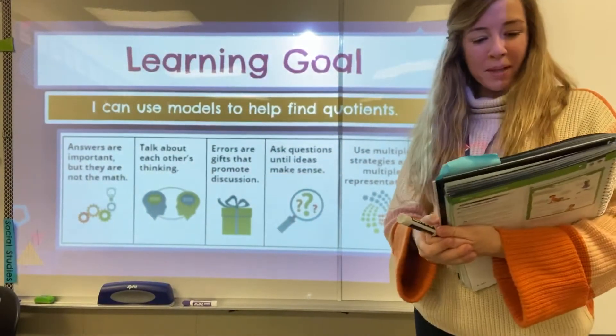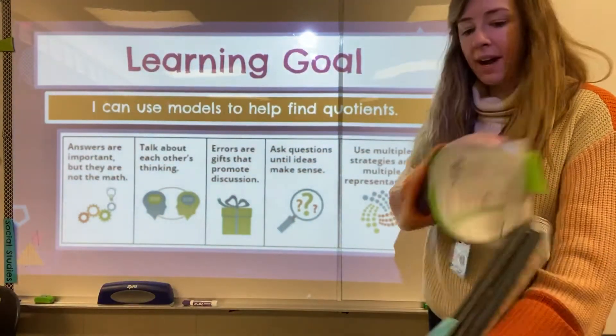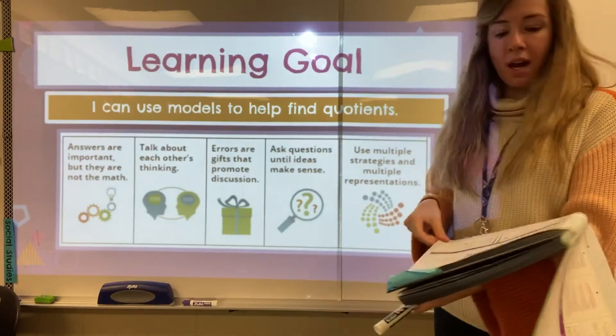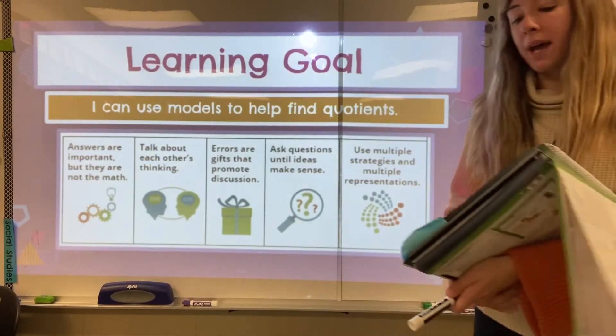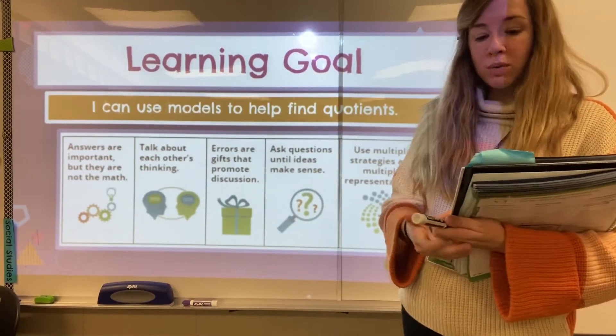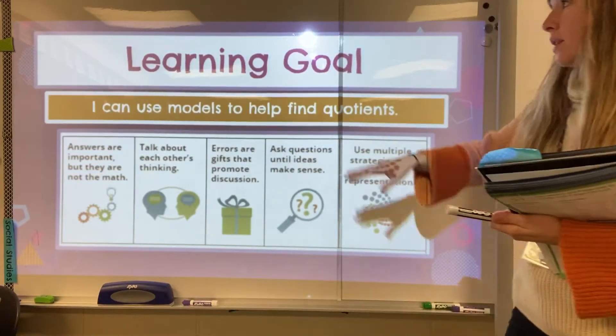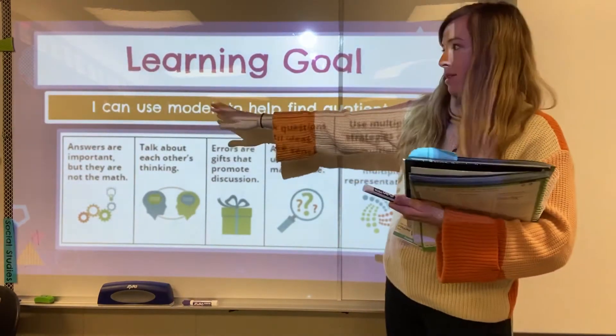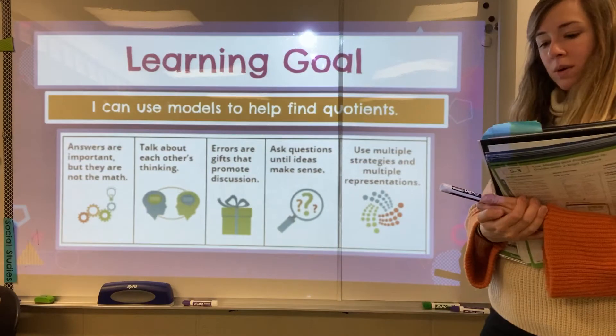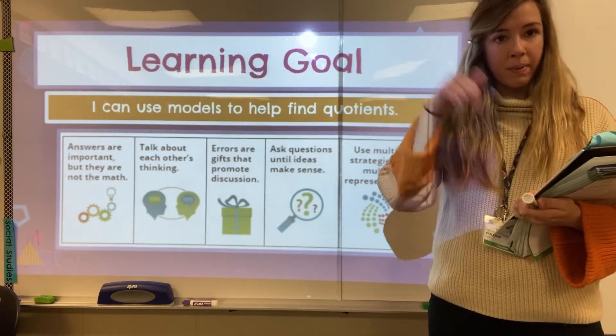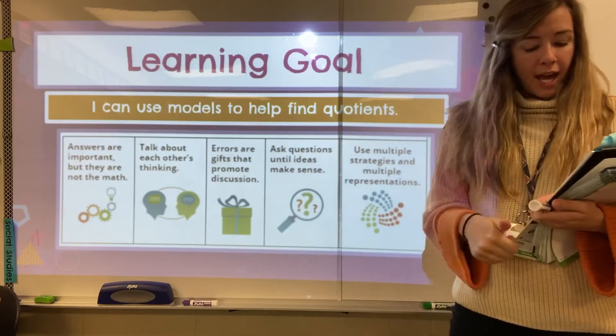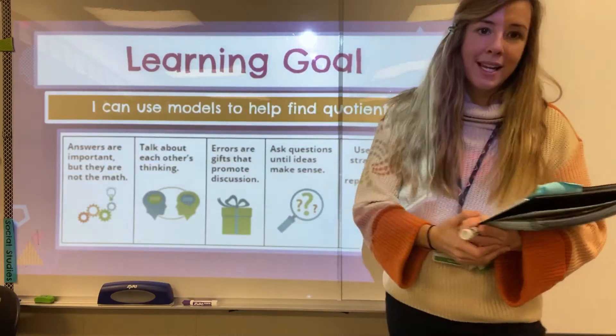Hi students! Today we are going to be working on lesson 5-3, which is using models and properties to divide with two-digit divisors. So here is our learning goal. You can say it with me: I can use models to help find quotients. And you'll need your workbook and a pencil, so pause right here and go get it if you need it. And then we are on page 189.